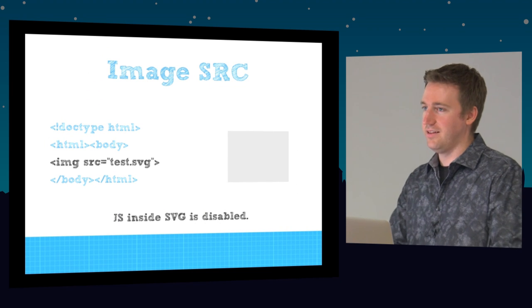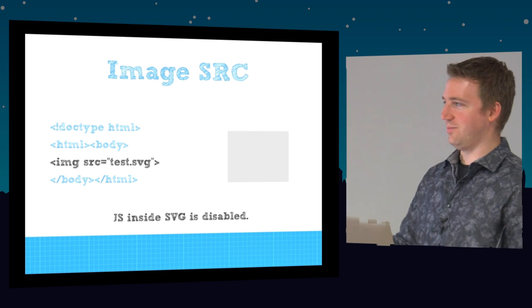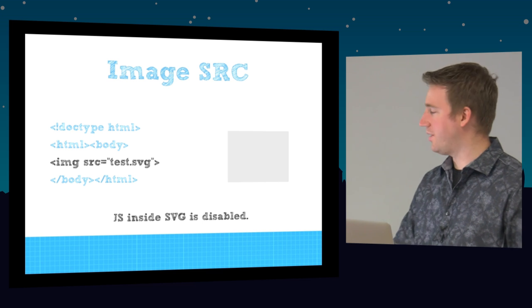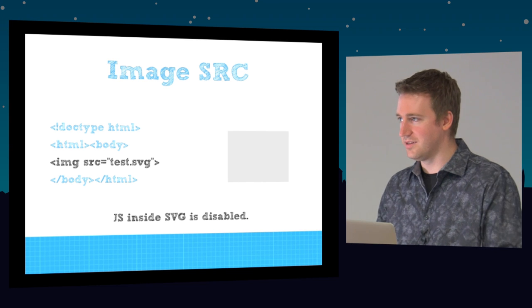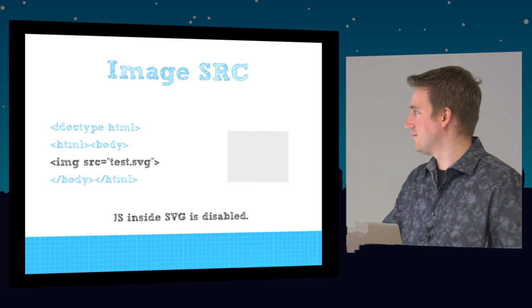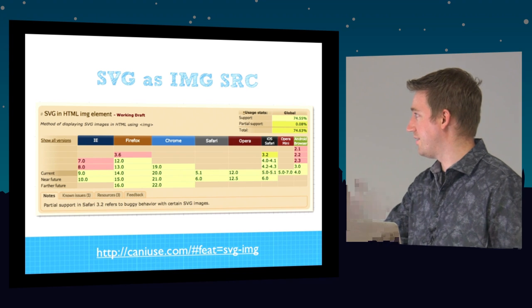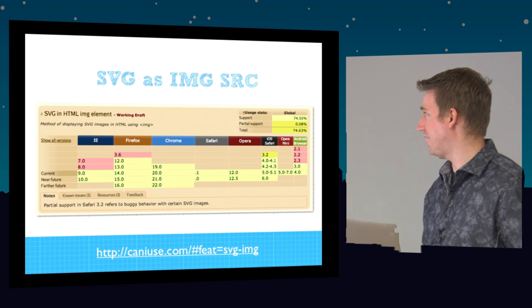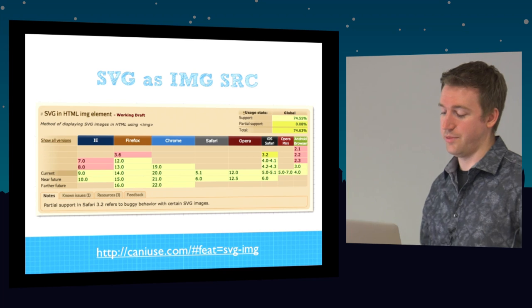You can also add SVG as an image src — instead of image src equals blah.jpg, you just say test.svg. But in this case all the scripting things we were talking about don't work — it's just an image tag that renders whatever the SVG shows. The browser support is similar but we're still missing IE7 and 8.